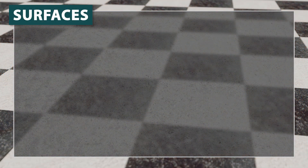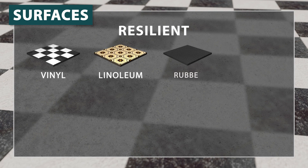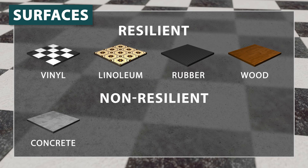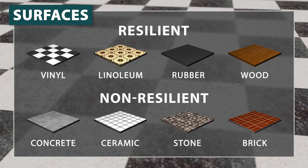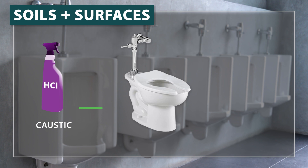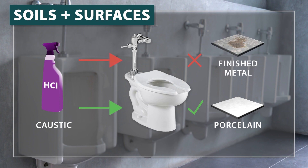Surfaces also fall into two categories. Resilient surfaces relate mostly to floors and include vinyl, linoleum, rubber, and wood. Non-resilient surfaces would include concrete, ceramics, stone, and brick. It's important to consider both the surface and the soil type, as some cleaning agents can be corrosive if used on the wrong surface. For example, a caustic such as hydrochloric acid might be suitable for removing soil from some surfaces, but may cause damage if used to clean a painted or finished surface.